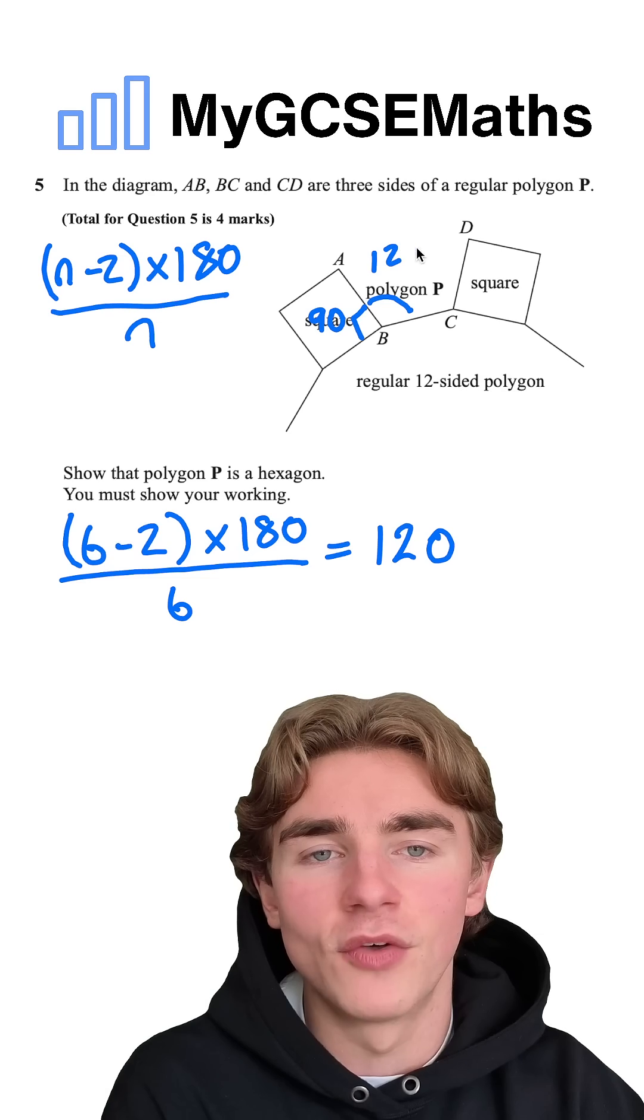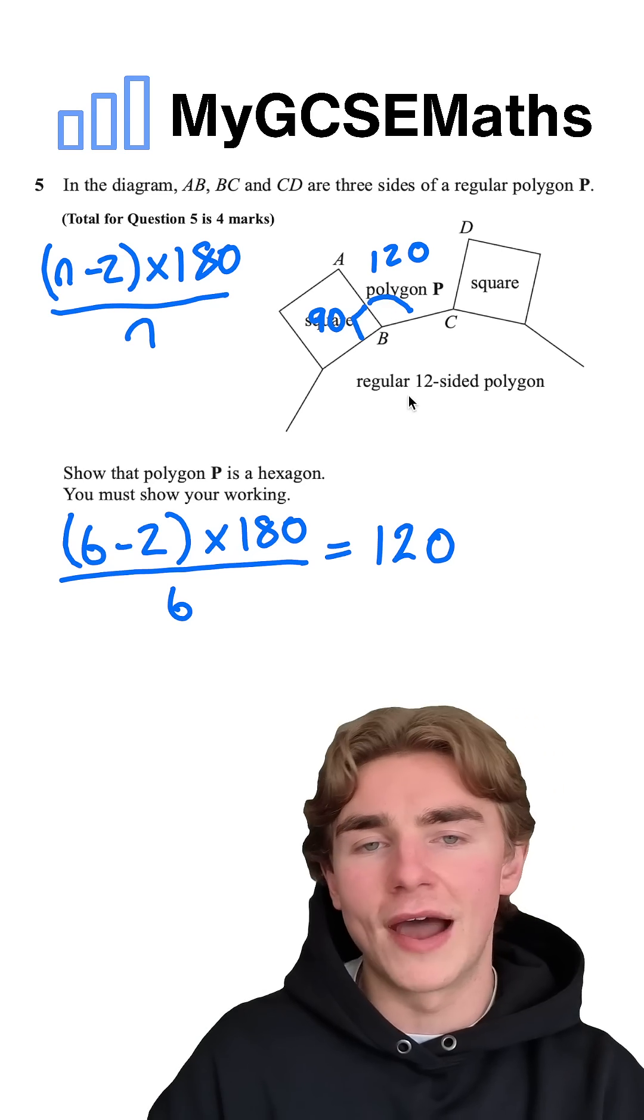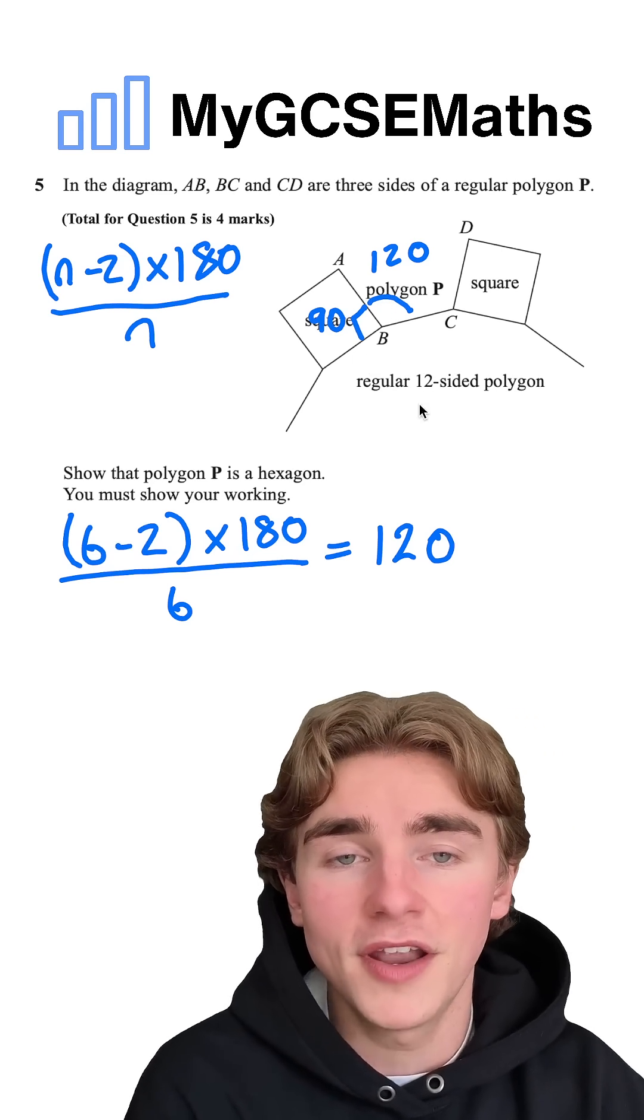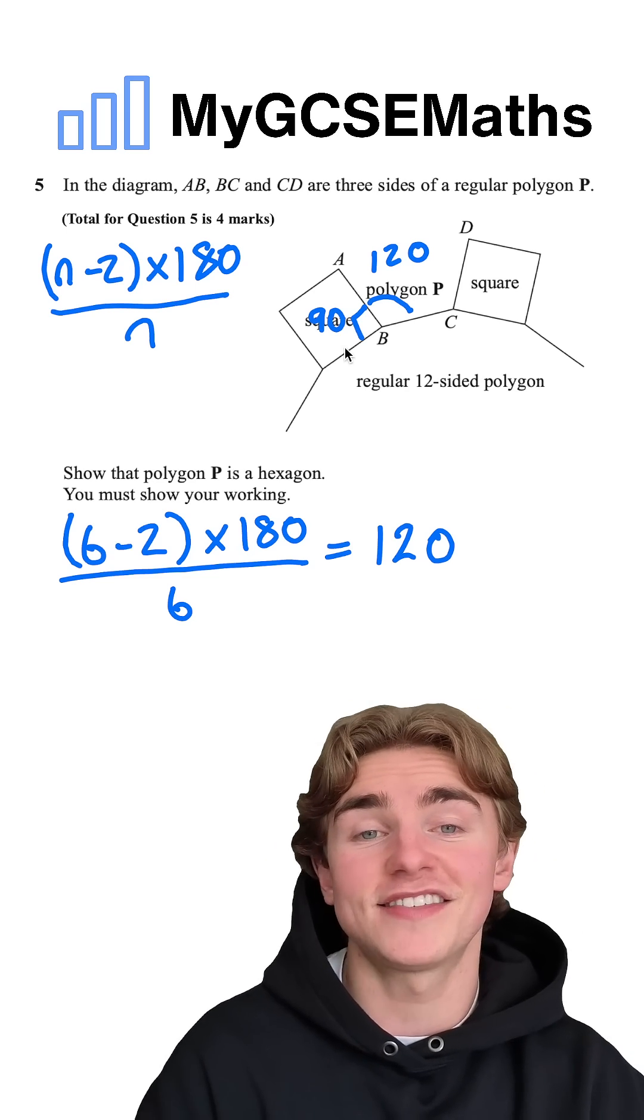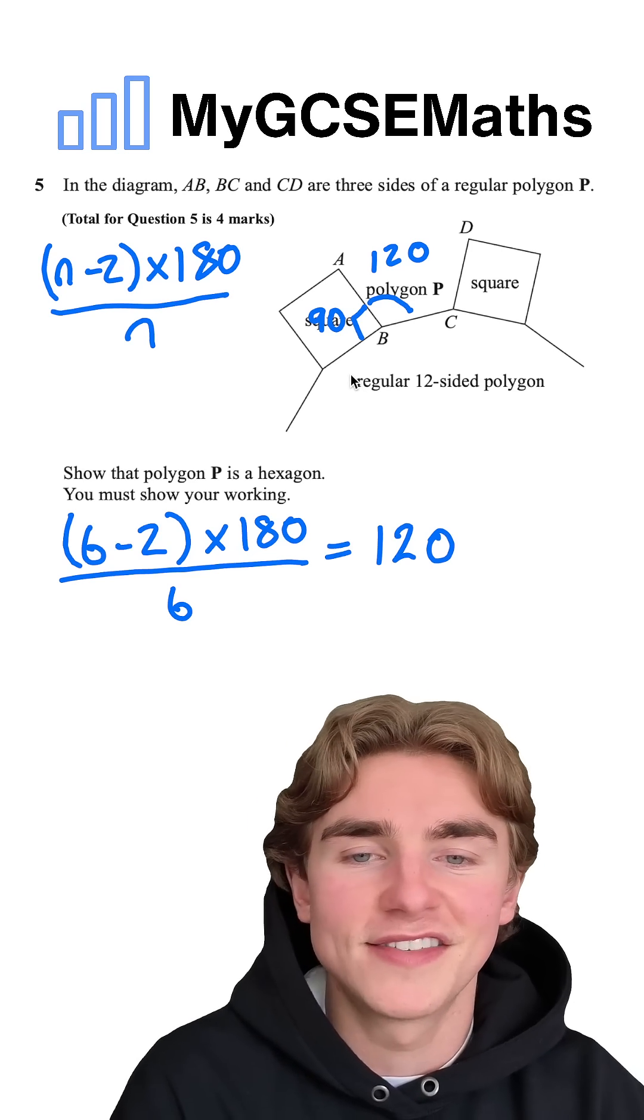So we know we have to show that this angle is 120. How can we do that? Well, if we work out the angle here, the interior angle of the 12-sided polygon, then what we can do is we can take this and our 90 away from 360, and that should give us 120.